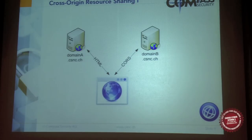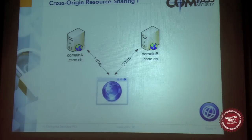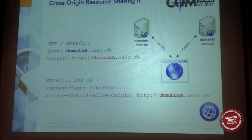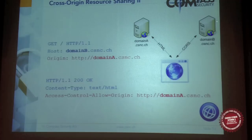To make that possible, a new HTTP header was introduced called the Access-Control-Allow-Origin header. Using that header, domain B can tell from which domain it accepts requests. Here is a short example: the request is from domain A — a JavaScript loaded from domain A doing a request to domain B. This is the response from domain B; it allows domain A to do the request.